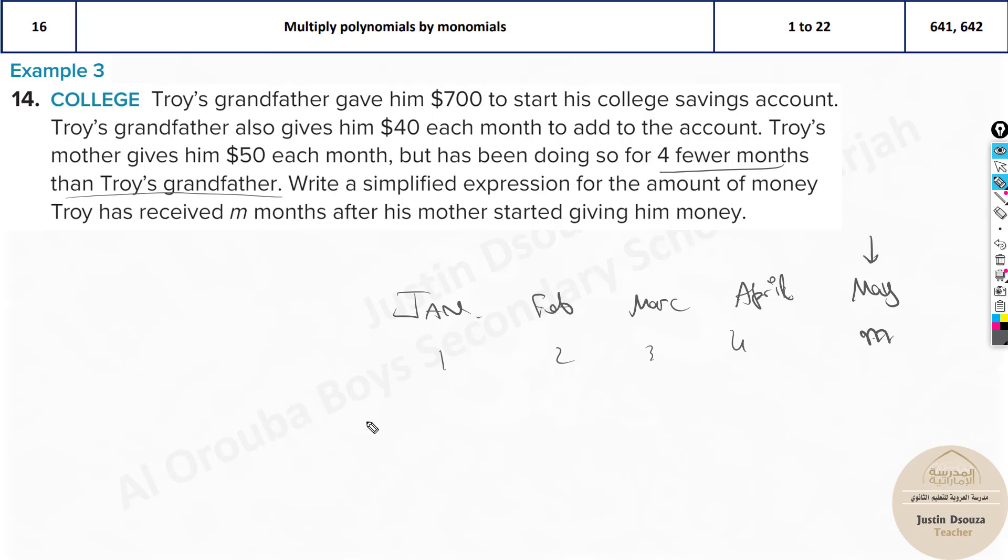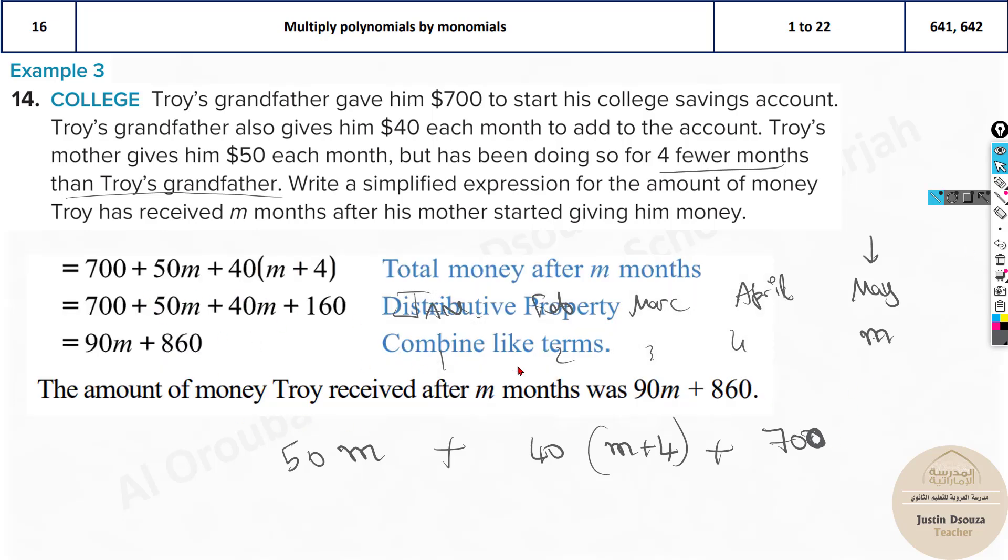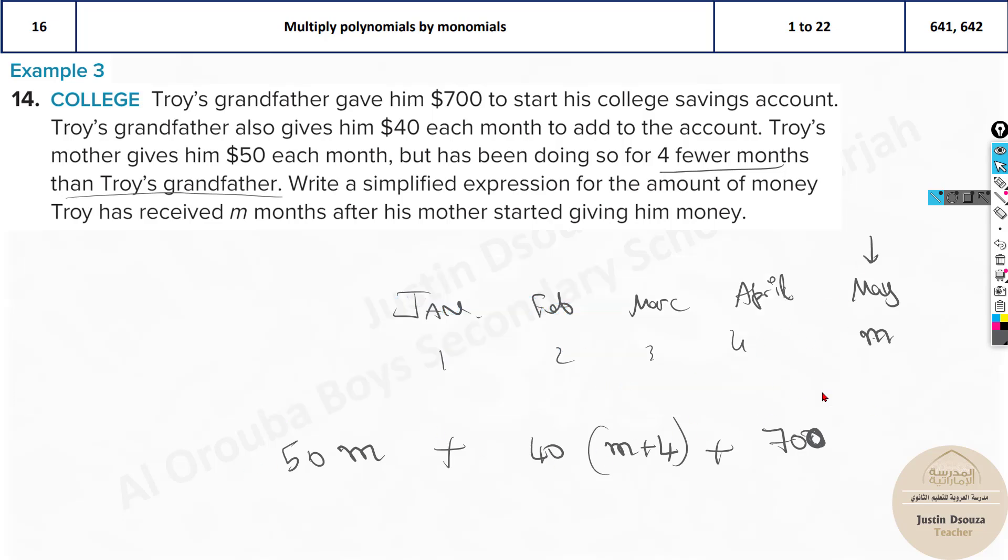If we understand it properly, we know the months of money given by his mom is M. So how many months was his grandfather giving? M plus four. Four months are extra. What is the coefficient? His grandfather gives 40. And how much does his mother give? It is 50. And there is one more thing. His grandfather already gave him a direct amount of money. That is 700, not every month, once only. So it's a constant value.